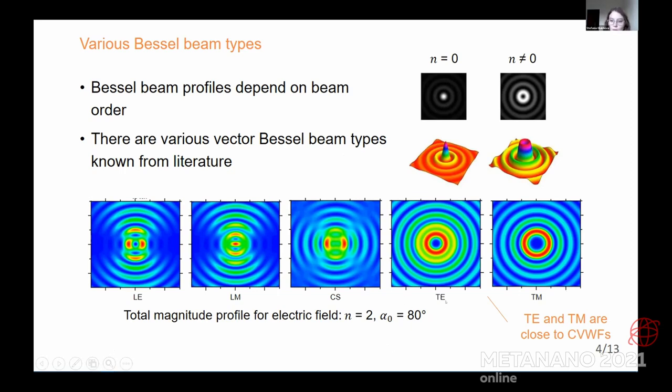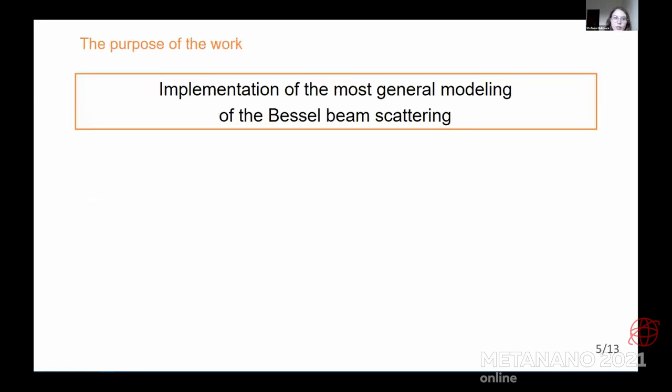Probably the most popular beams are TE and TM, they are also closely related to the cylindrical vector wave functions. All of these vector Bessel beams have lots of applications in various fields, and sometimes it's quite important to understand the process of scattering of such fields. Here is the purpose of my work, and the purpose was to implement the most general model of the Bessel beam scattering.